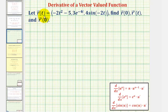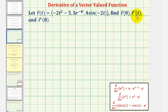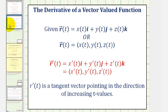We're given the vector-valued function r of t and asked to find r of zero, r prime of t, and r prime of zero. R of zero would be a vector where the terminal point is one point on the curve given by r of t. R prime of t would be another vector-valued function, and evaluating r prime of t gives us a tangent vector to the curve, so r prime of zero will be a tangent vector at t equals zero. To find r prime of t, we need the derivative of the x, y, and z components.